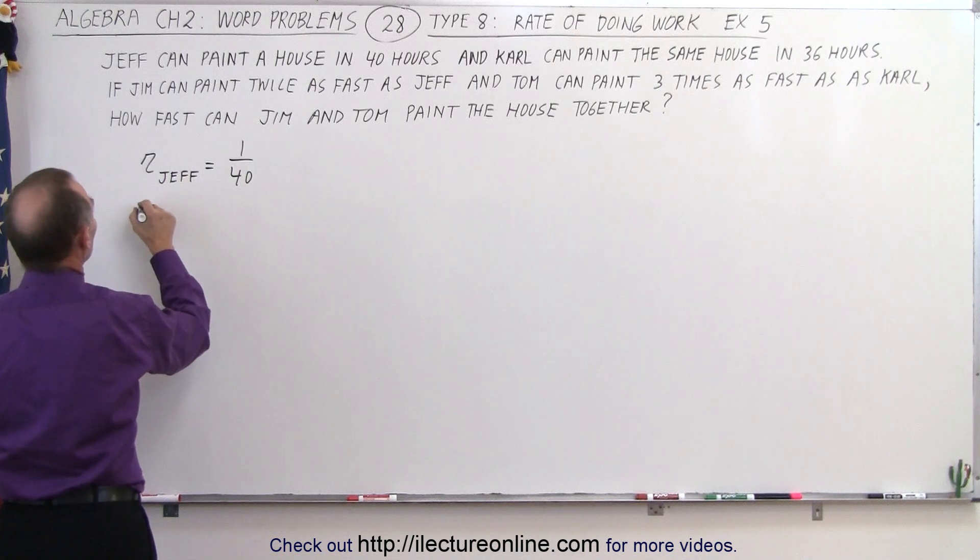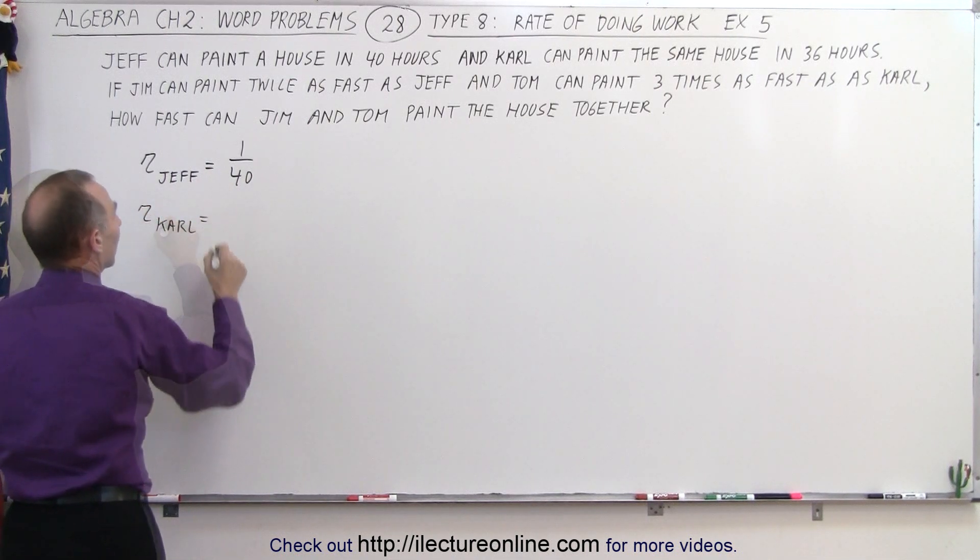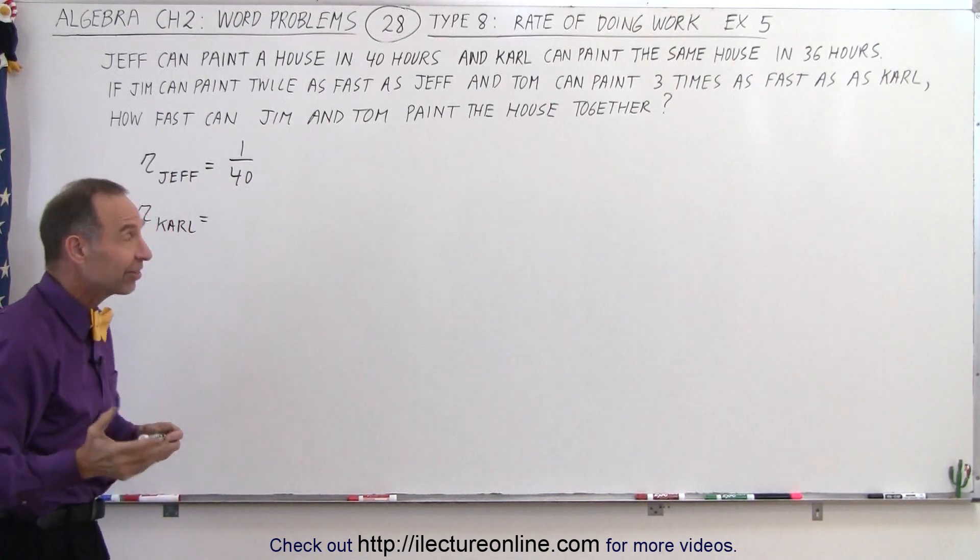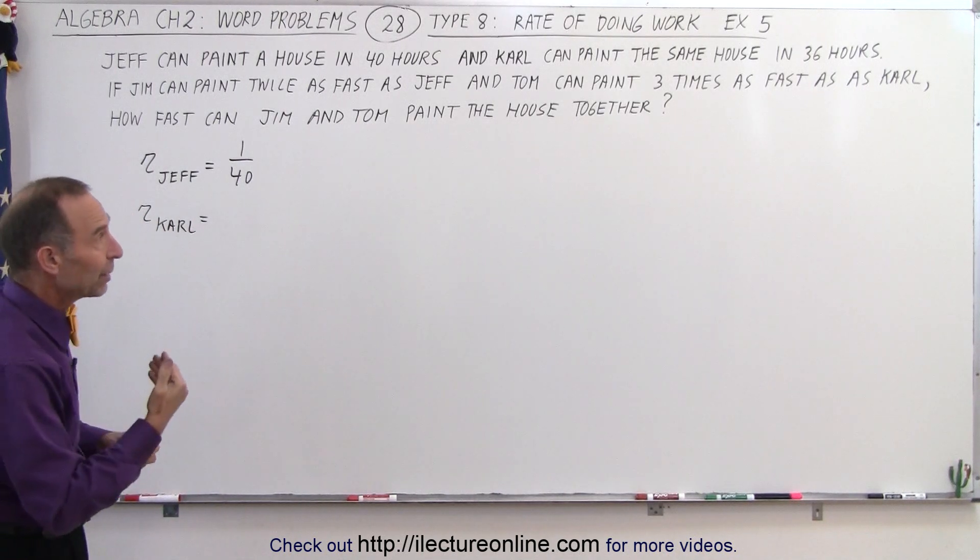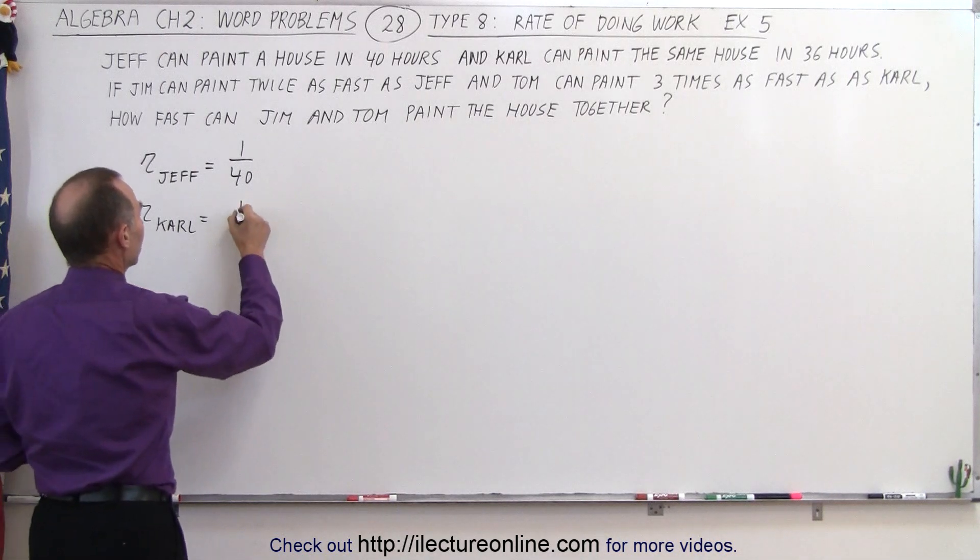The rate for Carl, well, Carl can paint a house in 36 hours, so his rate will be 1 over 36. In other words, he can paint 1/36th of a house in one hour.